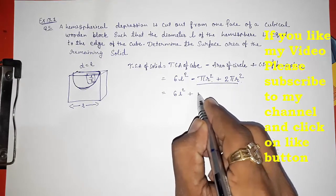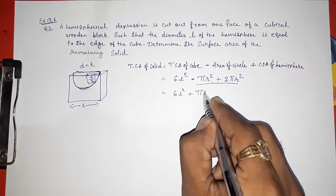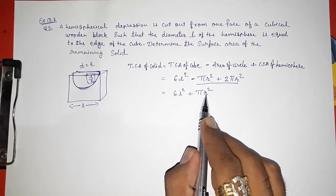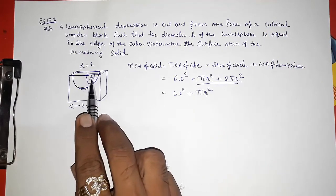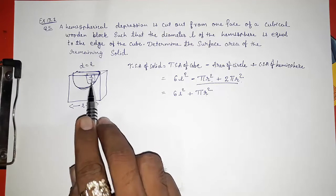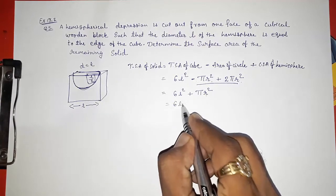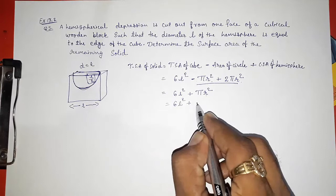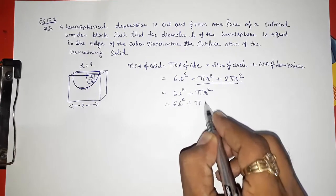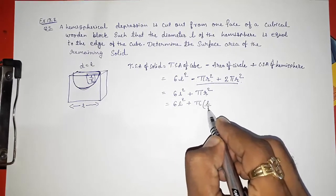Now instead of r, we know that the radius is L by 2, so I'm going to write 6L² plus π into (L by 2) whole square.